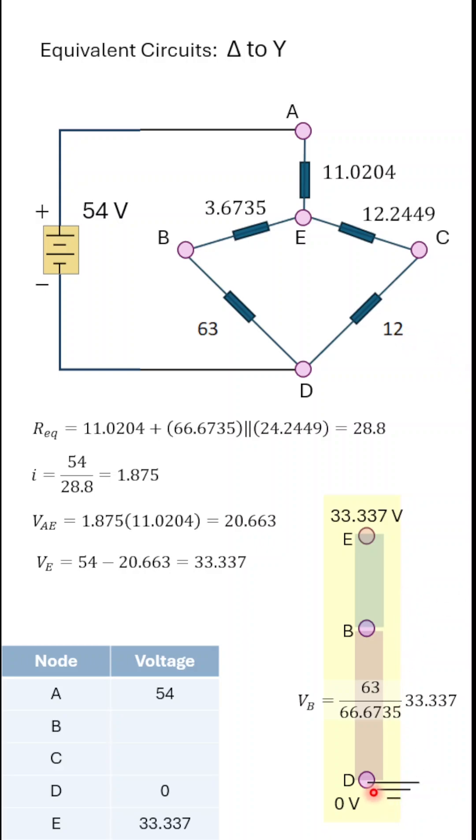So the way that works is the voltage from D to B, again, since D is zero volts, that means the voltage at B is the node voltage. The voltage divider has it that it's the resistance 63 ohms divided by the sum of the resistors, 63 plus 3.67, and that's the fraction of the 33.37 volts that is associated with the 63 ohm resistor or node B.